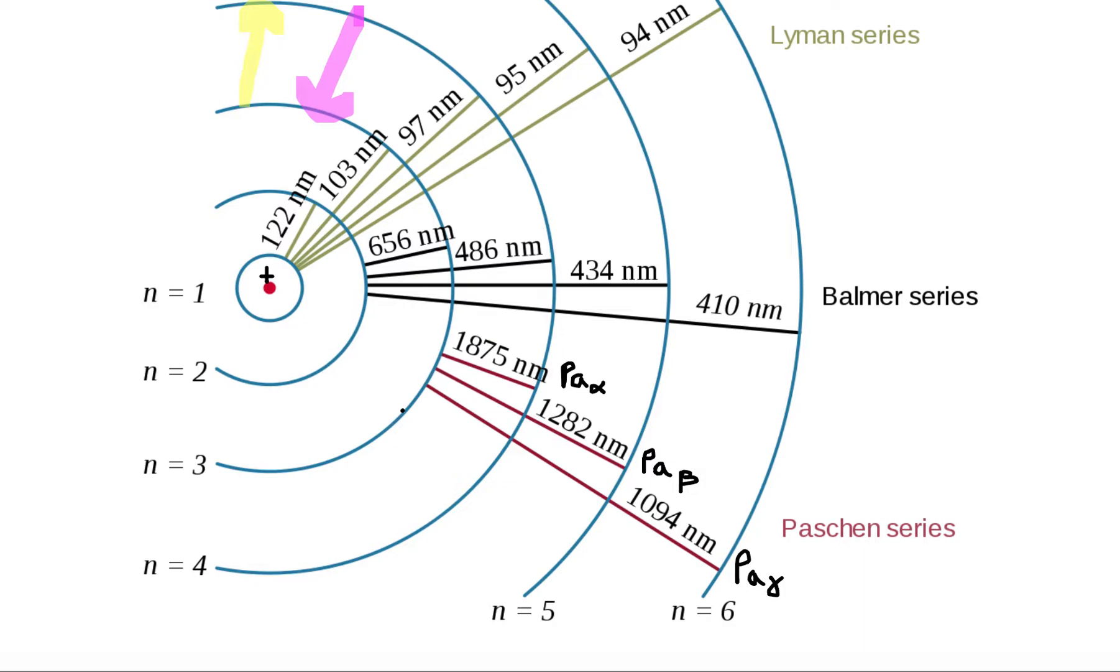If, however, the electron were located in the n equals 3 orbital and wants to move to the n equals 4 orbital, the electron would need to absorb a Paschen alpha photon of exactly 1875 nanometers to move upwards.